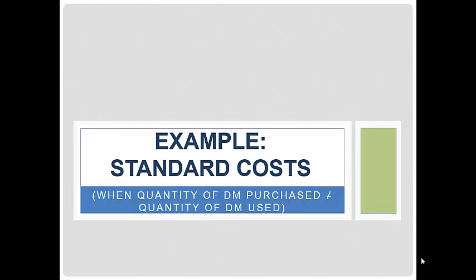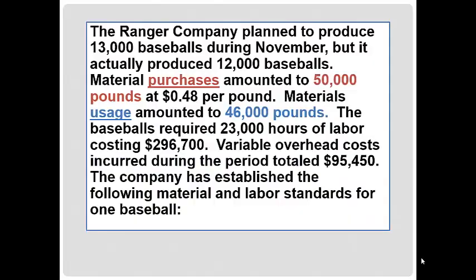Welcome. Let's work through a standard costing example and compute the variances. The difference in this problem is that we're going to see that the quantity of materials purchased is not equal to the quantity of materials used. The Ranger Company planned to produce 13,000 baseballs during November, but it actually produced 12,000 baseballs. We're going to use a flexible budgeting concept, so what's relevant here is that we actually produced 12,000 baseballs.